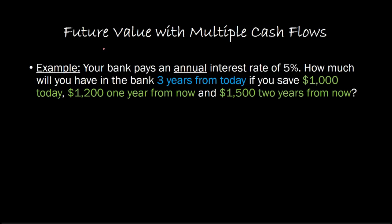So up until now, all the computations that we've done with respect to present value and future value have involved situations where we only had a single cash flow. So when we were calculating future value, we were just calculating the future value of just one amount two years out into the future. Similarly, when we were calculating present value, we were only dealing with one amount out into the future and bringing it back to the present. What we want to do now is extend that framework to account for situations where we are dealing with multiple cash flows. It's a very simple extension of the same principle.